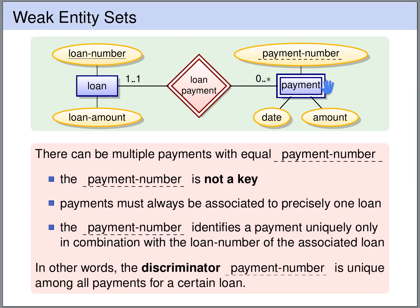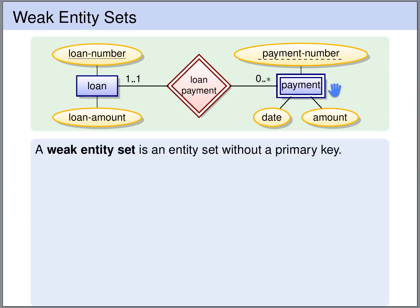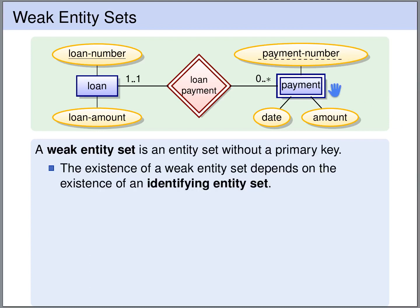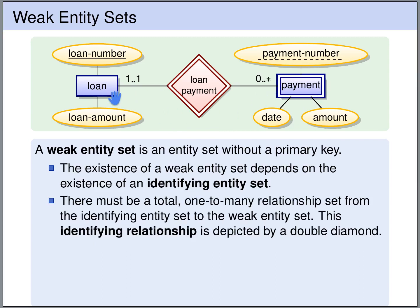This dashed underlined payment number is called a discriminator. And this discriminator payment number is unique among all the payments of a certain loan. A weak entity set is an entity set without a primary key. The existence of such a weak entity set depends on the existence of an identifying entity set. The weak entity set and the identifying entity set must be related by a one-to-many relationship set, called the identifying relationship set. We depict it using a double line, like we do for the weak entity set.